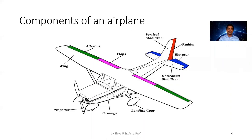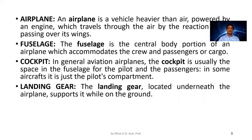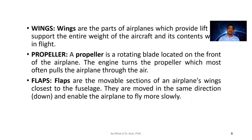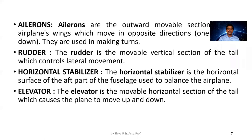In this image you can see flaps. The airplane falls under the heavier-than-air category. The fuselage is the central body which accommodates passengers, pilots, wing attachments, and tail attachments. The propeller is a rotating device used to produce thrust for an aircraft by rotating its blades.